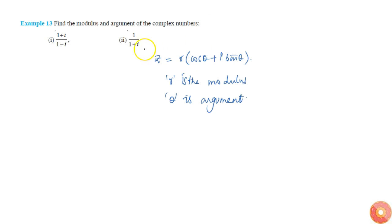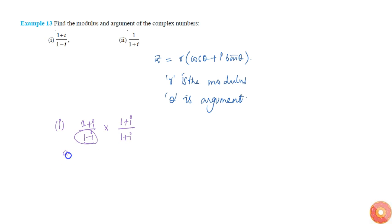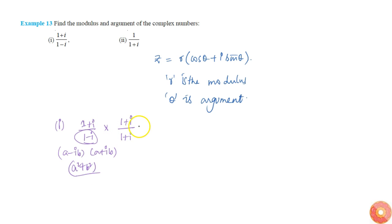In the first case, z is (1 plus i) by (1 minus i). We multiply with (1 plus i) again, because in the denominator we have 1 minus i. Whenever we have a minus ib in the denominator, if you multiply with a plus ib in both numerator and denominator, the denominator becomes simply a squared plus b squared, which is a real number.